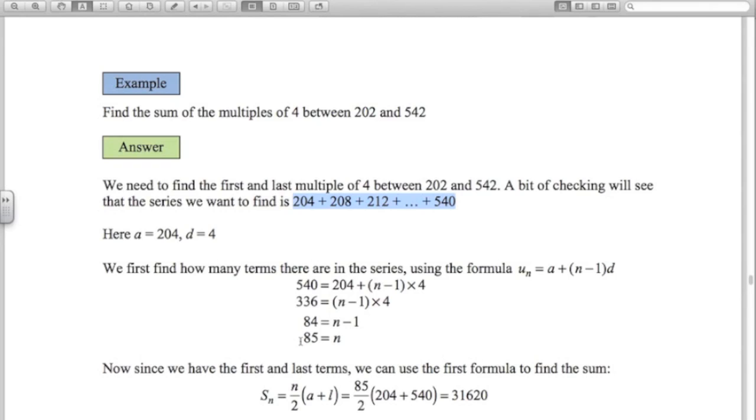If you just go 540 subtract 204 and then divide by 4, your calculator gives you 84. So there's 84 jumps in here, but there's actually 85 terms. So just be careful of that if you like to use that other method.